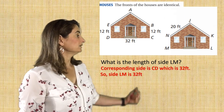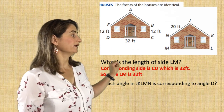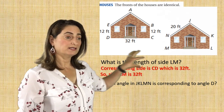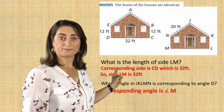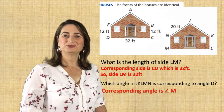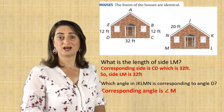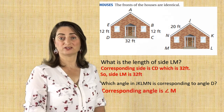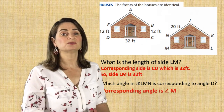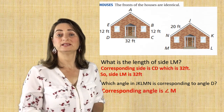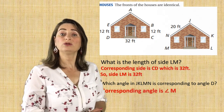Now, which angle in JKLM is corresponding to angle D? If I slide this house on top of the other house, angle D will correspond with angle M. Now you're able to answer questions such as what is the perimeter or area of the front of the house using identical or congruent figures. That's why we need to know how to identify congruent figures — to figure out the exact measurement of something we don't know, such as the side lengths or the angle measures.